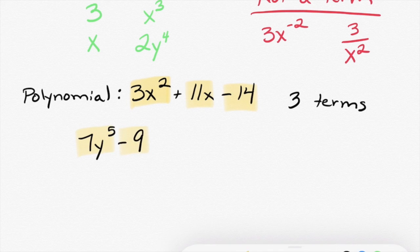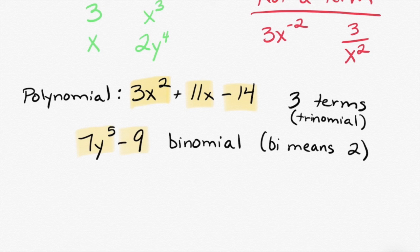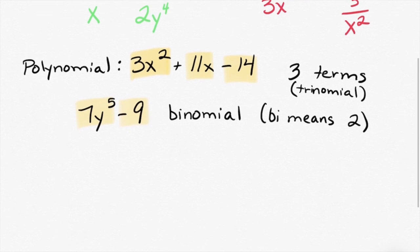When a polynomial only has two terms, you could call it a polynomial. We could also be really specific and call this a binomial. Bi meaning two. It would be unusual to do this, but you will occasionally hear a three-term polynomial called a trinomial.